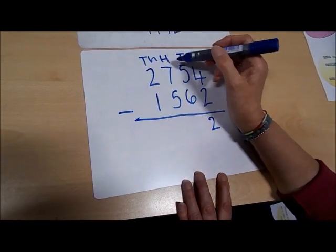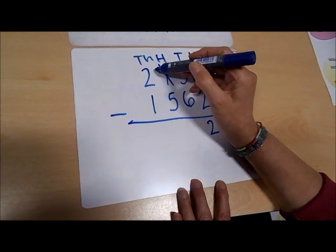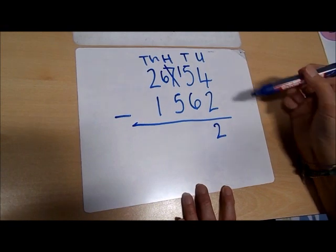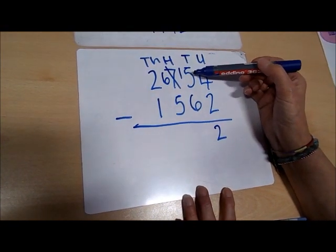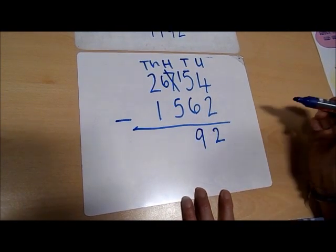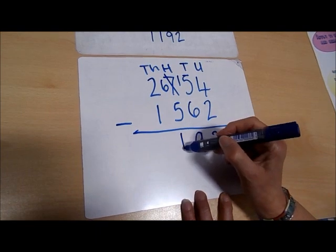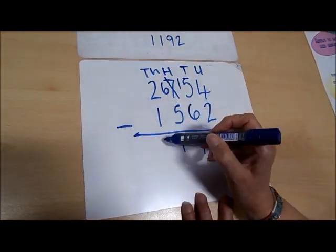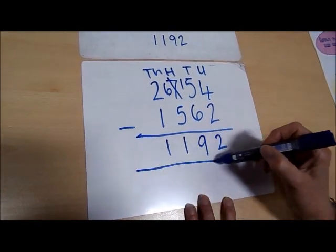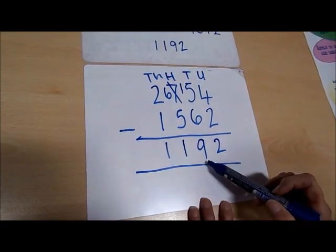As before, we need to borrow 100 from here, so this becomes a six, and we bring the one over into this column. This number take away six is nine. Then six take away five is one. Two take away one is also one. So we get our answer: 1,192.